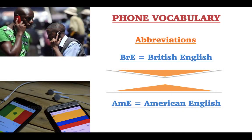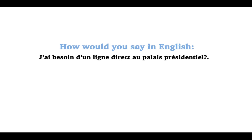Welcome back everyone to ELL 101, English Learning Lab 101. Today we're going to learn about phone vocabulary. There are certain abbreviations you need to know: BRE means British English and AME is American English. Today's challenge: how would you say in English — 'j'ai besoin d'une ligne directe au palais présidentiel'? Follow us until the end of this lesson and you will know exactly how to say it.